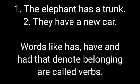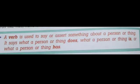Now students, we are going to see verbs which show belongingness or position. Here the example: the elephant has a trunk. The word 'has' shows what belongs to the elephant. Second example: they have a new car. The word 'have' shows what belongs to them. So verbs like have, has, had, which denote belongingness, are called verbs. A verb is used to say or assert something about a person or thing — what a person or thing does, what a person or thing is, or what a person or thing has.